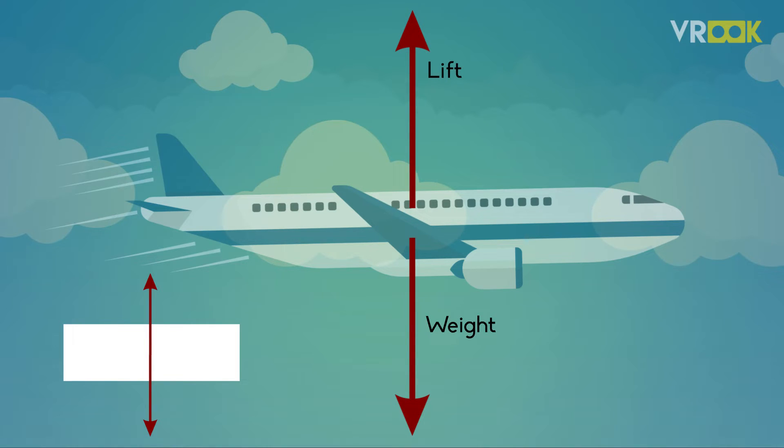Engines of the aircraft provides required thrust to move forward, so we represent that force. For this thrust there will be a drag force due to air resistance in the opposite direction but drag will be less compared to thrust. These are the forces which are acting on the aircraft and we can represent all these forces like this.